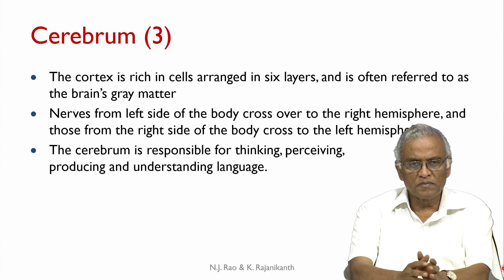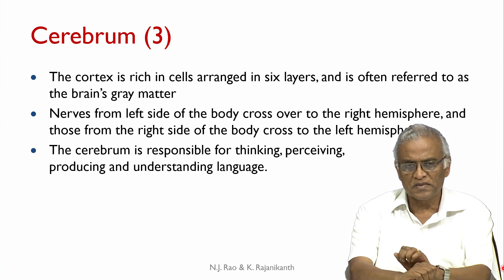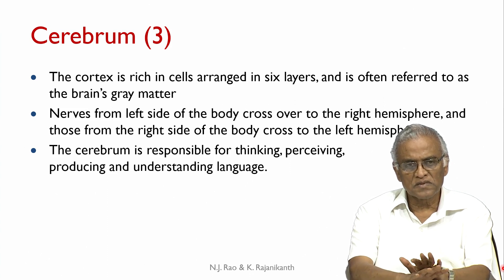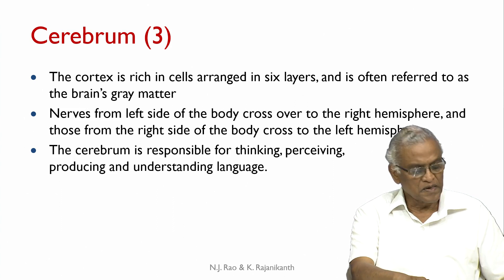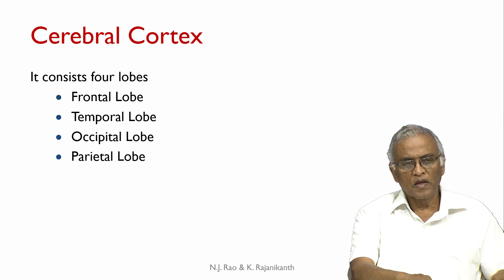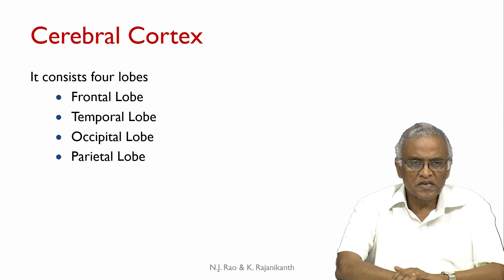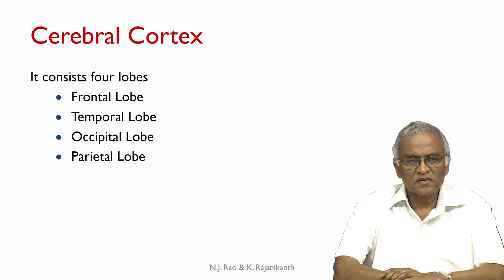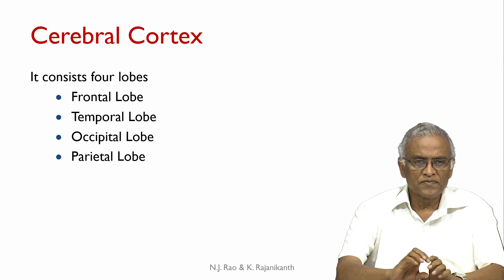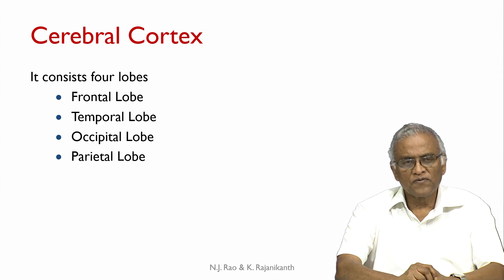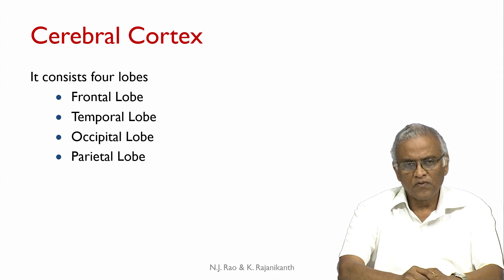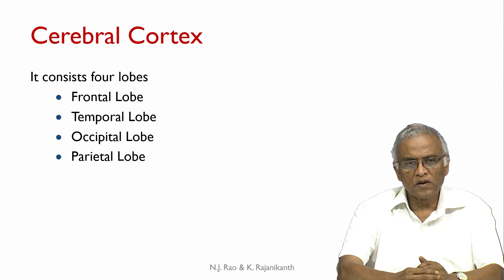The cerebrum is responsible for thinking, perceiving, producing and understanding language — all thinking processes take place in the cerebrum. The cerebral cortex consists of four lobes: the frontal lobe, temporal lobe, occipital lobe and parietal lobe.